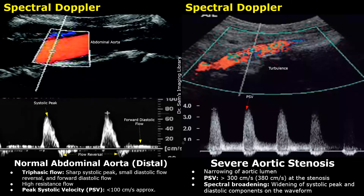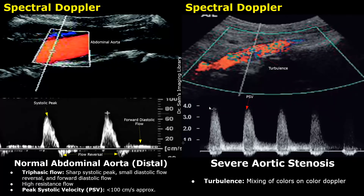In severe stenosis, the PSV will be greater than 300 cm per second. In the graph, the unit is meters per second — the PSV here is 3.8 meters per second, which is 380 cm per second, so it is very high. You can also see turbulence at the site of stenosis, with a mixing of red and blue colors. This is because blood is moving in different directions because of the plaque, giving all these different colors.